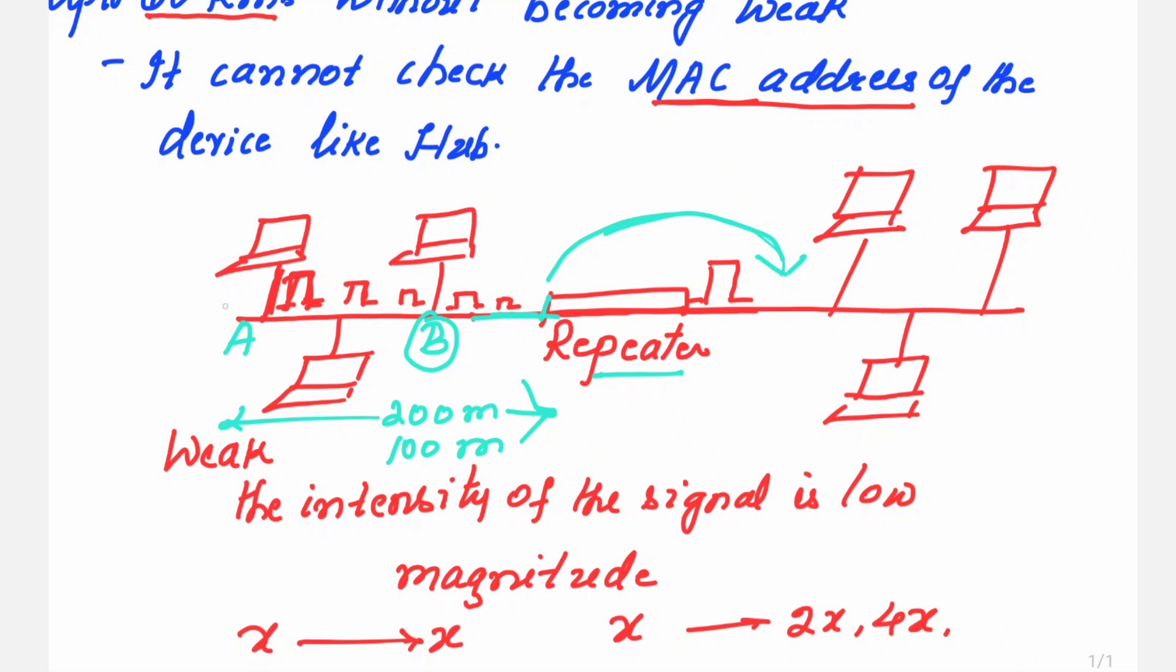So, depending on the distance in the network, this positioning of the repeater is decided. It is not that just one repeater is placed. Depending on how long this distance is, more number of repeaters can also be placed and the intensity of the signal can be restored.